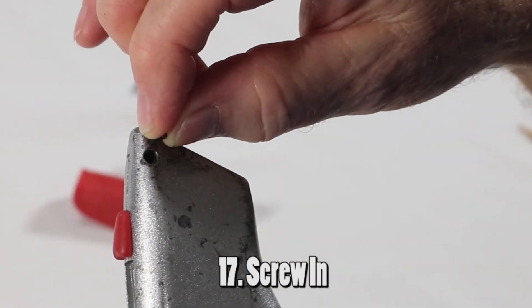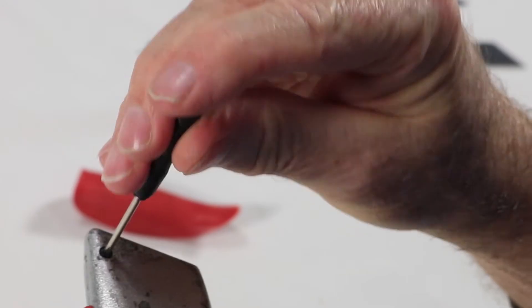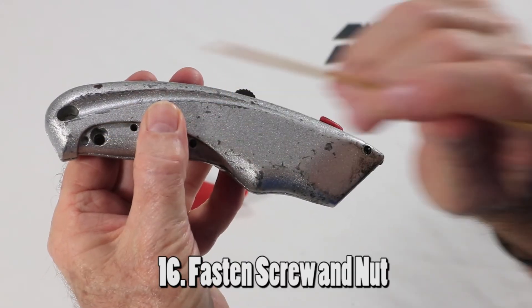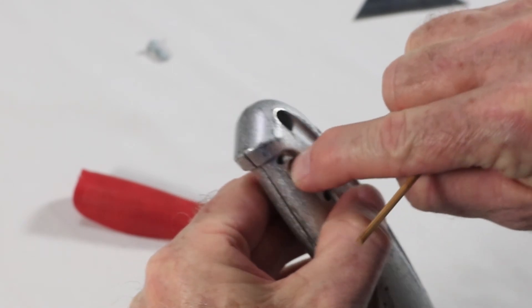Put the tiny screw in the tip of the handle. Fasten the screw and nut. Align the nut in the hole with two flat surfaces.